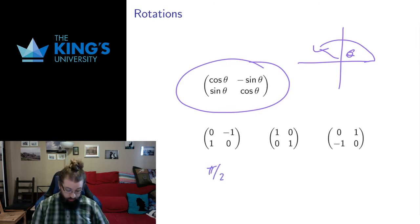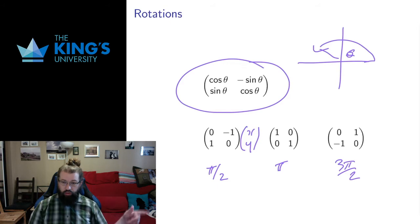This is a rotation by pi over 2, that's a quarter turn. This is a rotation by pi, which is a half turn. This is a rotation by 3 pi over 2, which is three quarters of a turn. Feel free to try these out on some vectors and you will see that the resulting vector will be the same length and just a quarter turn counterclockwise.